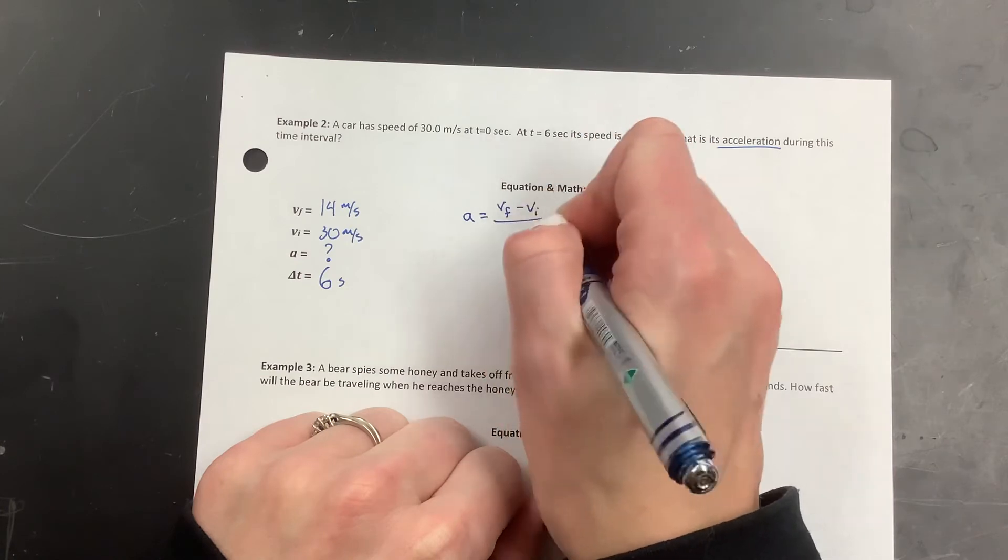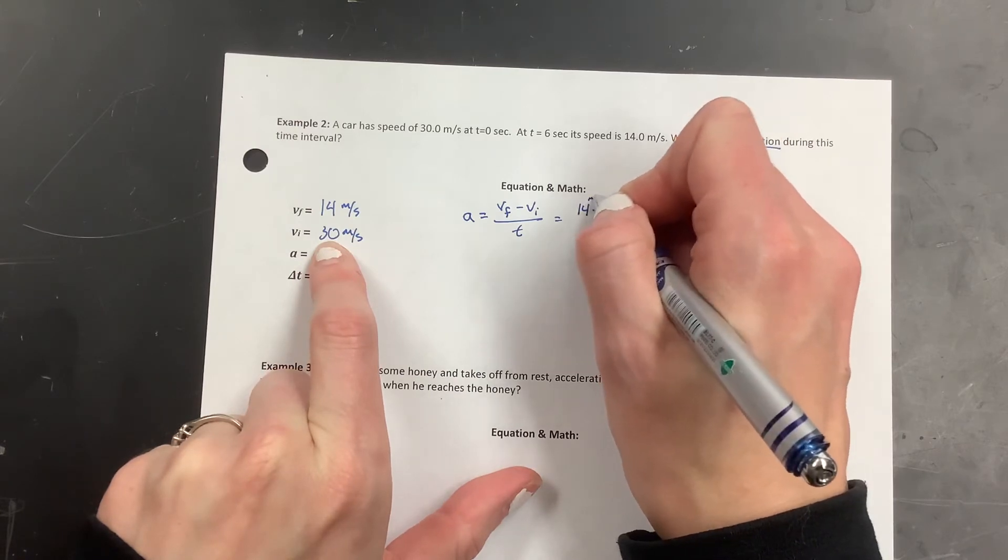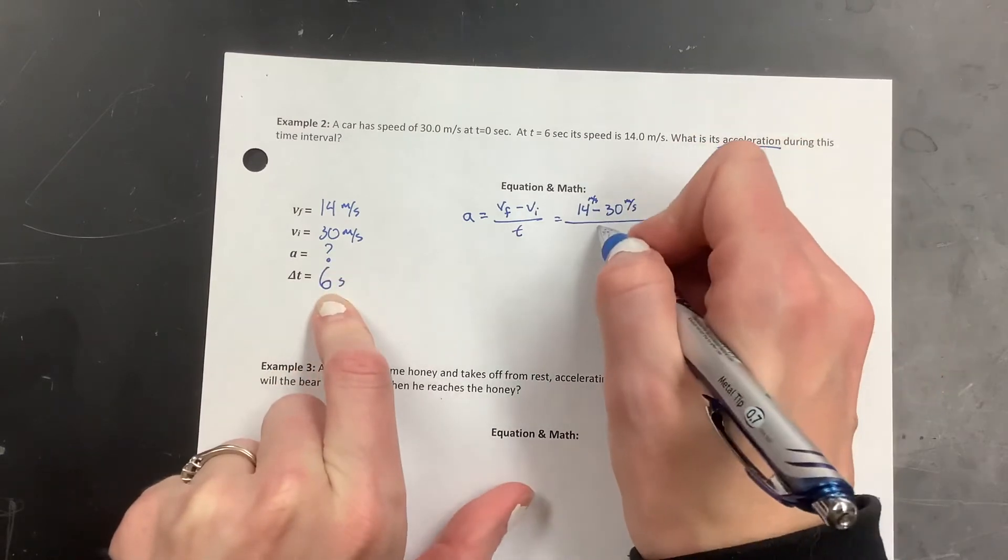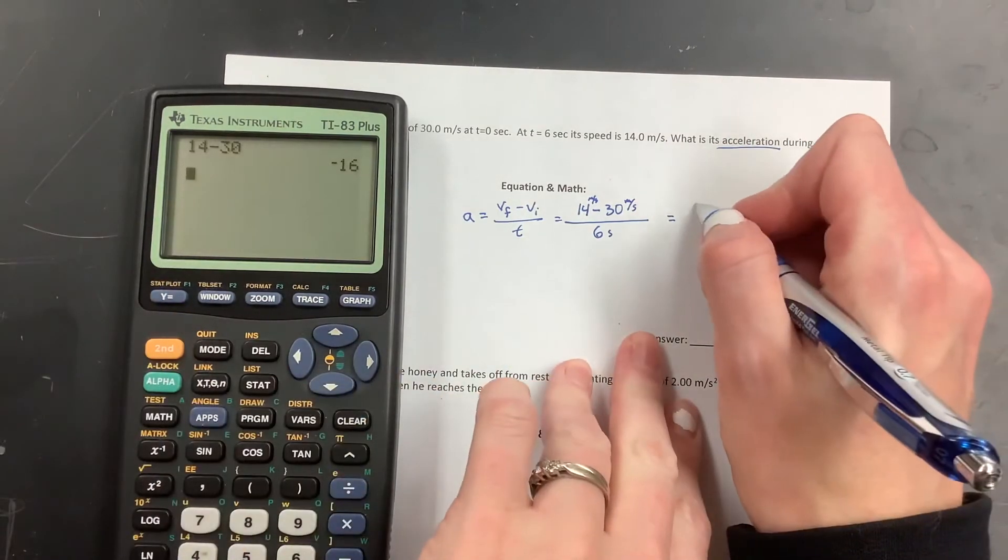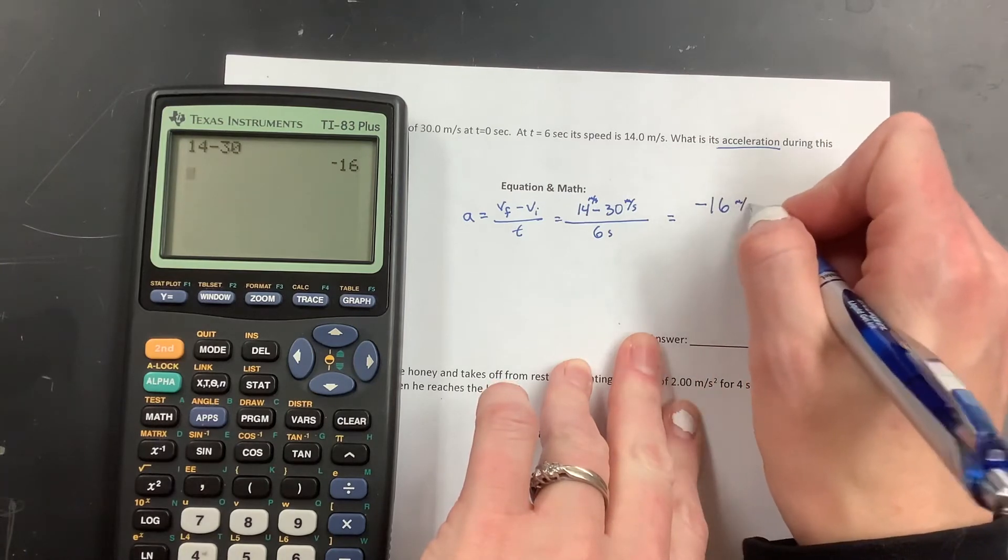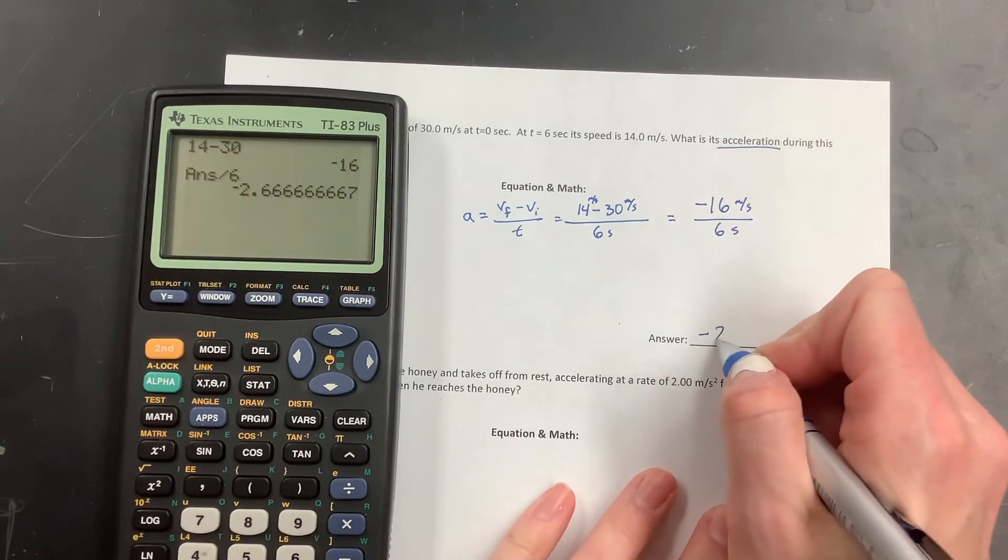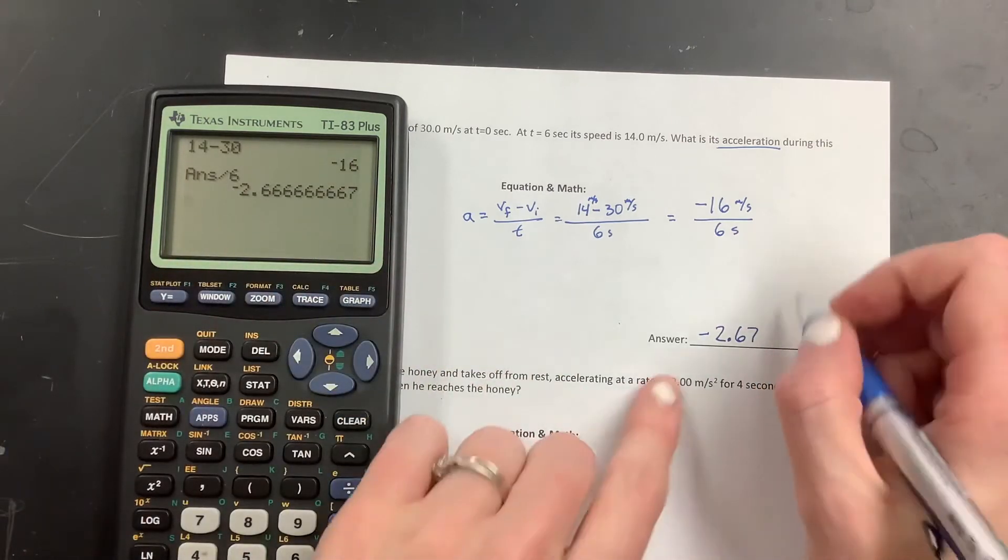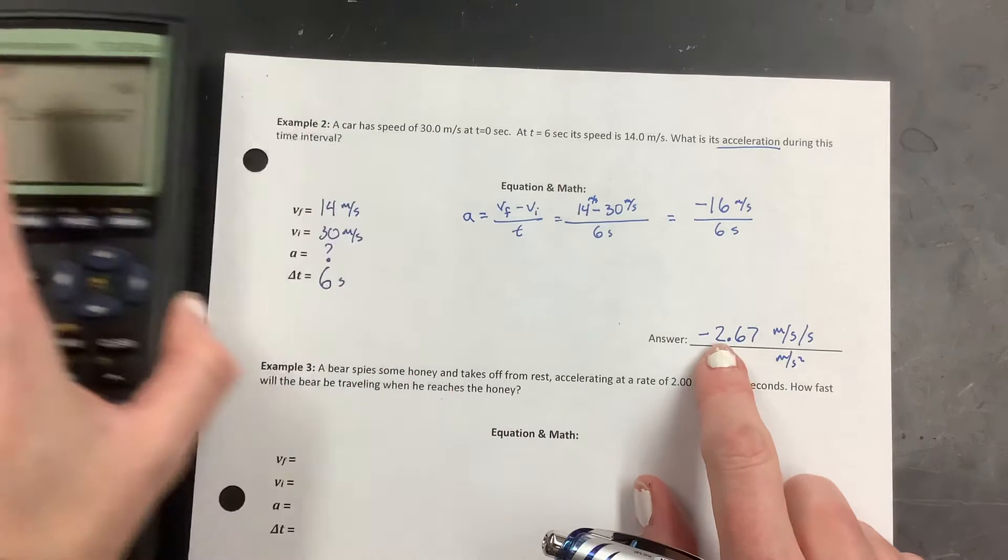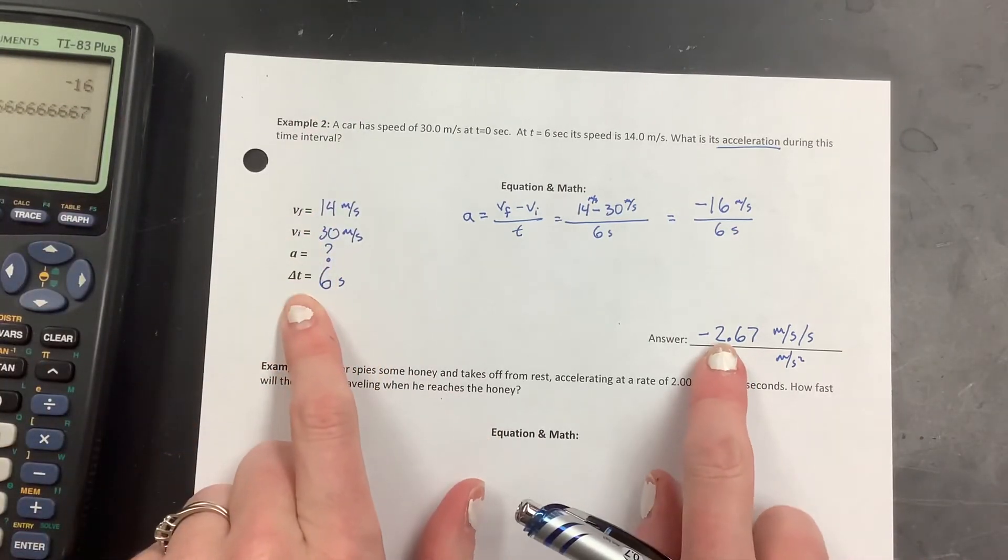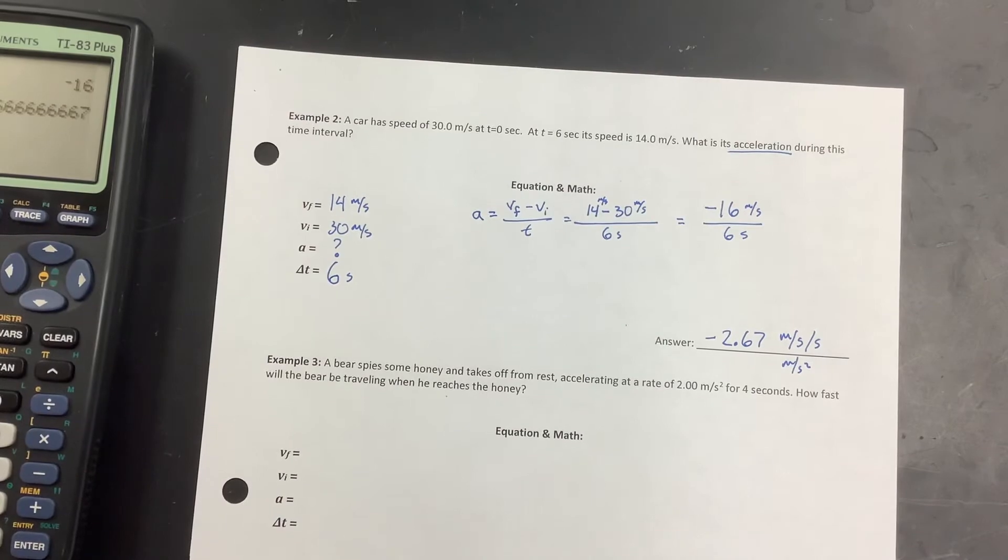All right, so acceleration equals VF minus VI over T. Let's see, VF is 14. VI is 30. I forgot my units. Meters per second to meters per second. Divided by the time, which was 6 seconds. All right, 14 minus 30. 14 minus 30. Remember to push enter. Negative 16. That's good. I needed a negative number because it's slowing down. Meters per second. Divided by 6 seconds. I bet that's not very pretty of a number. Divided by 6. Negative 2.67. I'm rounding. I'm not typing all that in here. And then let's see, meters per second per second. Or you could write meters per second squared. Either one of those would be okay. So negative. I got the negative because it's slowing down. And I needed that negative. That negative is important because it is slowing down here.